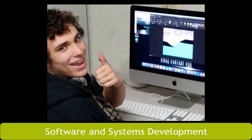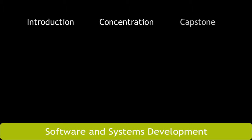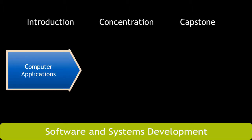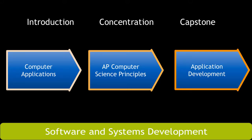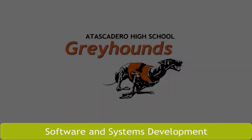There are three levels of courses: introduction, concentration, and capstone. The introduction course is Computer Applications, followed by the concentration course AP Computer Science Principles, and ending with the capstone course Application Development.